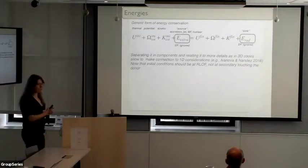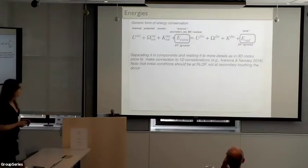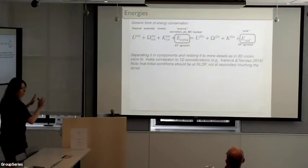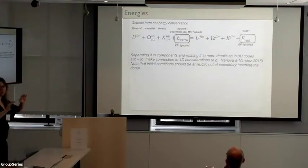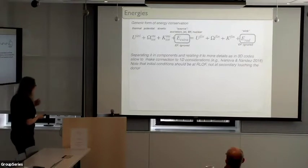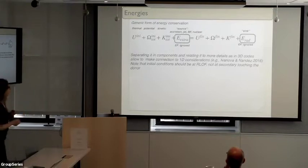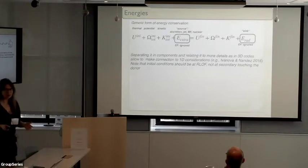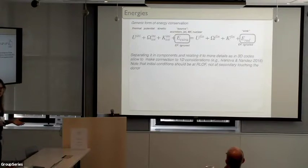What energies do we really need to talk about? If we discuss the shortcut from initial to final stage: we have some initial thermal energy, potential energy, kinetic energy, and some extra energy. Extra energy could be anything you want to use in order to eject the envelope if everything else didn't work out — basically it's a fudge factor. Everyone can make justifications in whatever direction they wish. What is usually included there is: jets, magnetic fields, nuclear energy — you can name it.